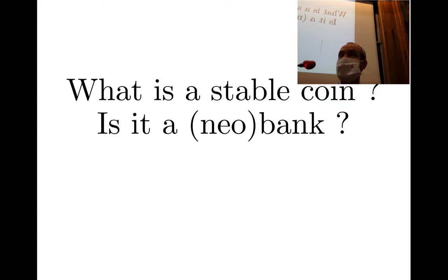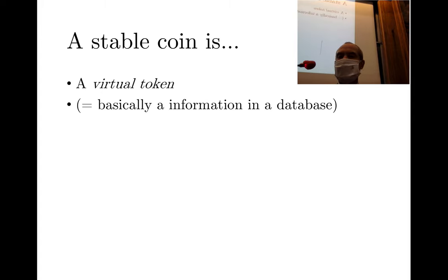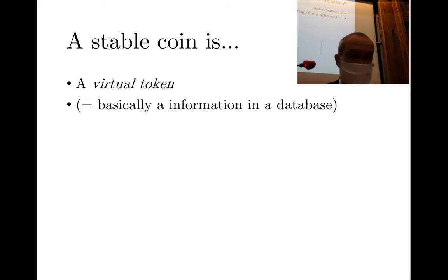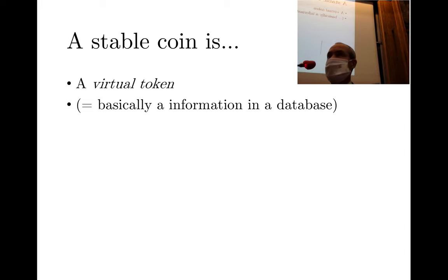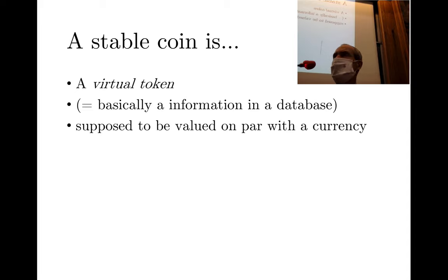Is a stablecoin acting like a bank or neo-bank? A stablecoin is a virtual token — information in a database, like Bitcoin, which exists only in the blockchain. A stablecoin is pegged to a given currency, so one stablecoin should be worth one dollar. Ideally, the balance sheet means you release tokens and buy cash so that for every token issued there is one cash unit to back it.